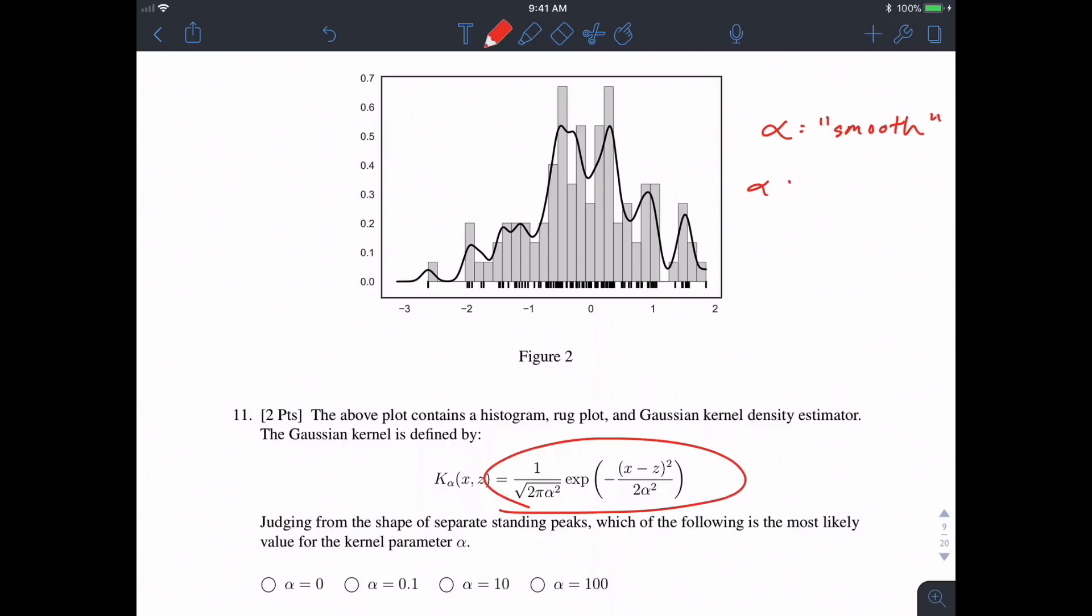If you look at the equation we're given, alpha actually corresponds to the standard deviation of each Gaussian. Standard deviation—you can also think of it as alpha corresponding to the variance. The greater alpha is, the more smooth your KDE function will look like.